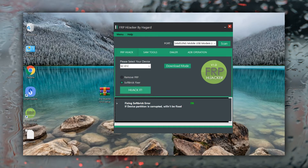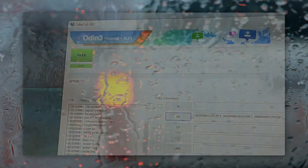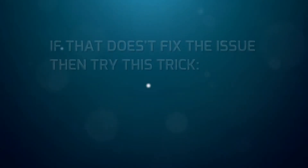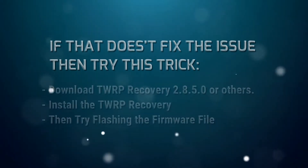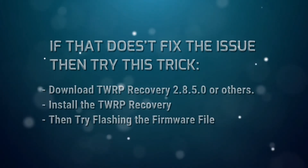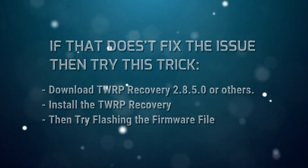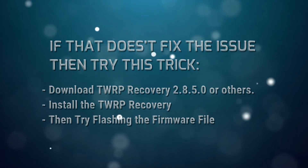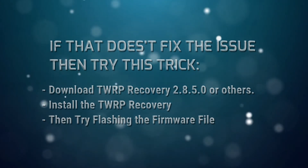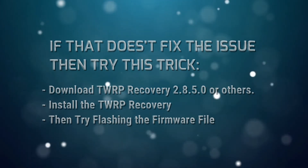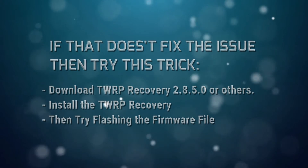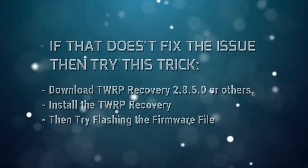And that's it — the error which was giving us a tough time has vanished. Now you should be able to easily flash your firmware file on the device. At this point, if your device is still not accepting the firmware file through Odin, then download Word Recovery 2.8 and flash that first using Odin. As usual, the link will be given in the description below. After that you should be able to flash the firmware without any issue.